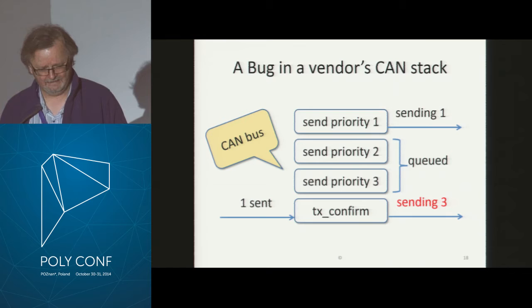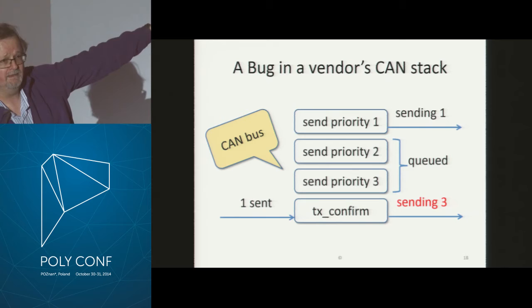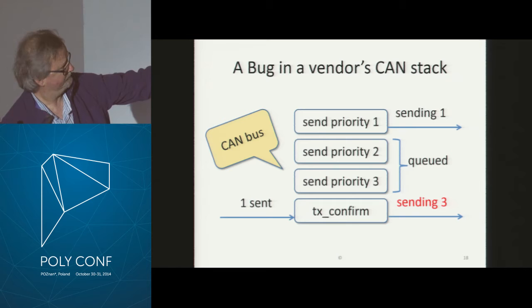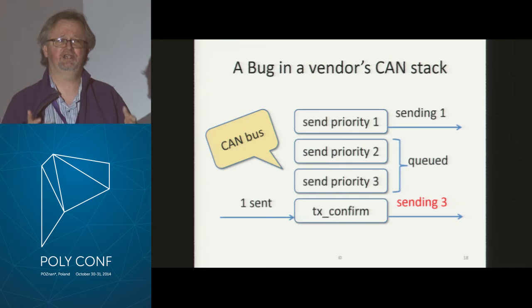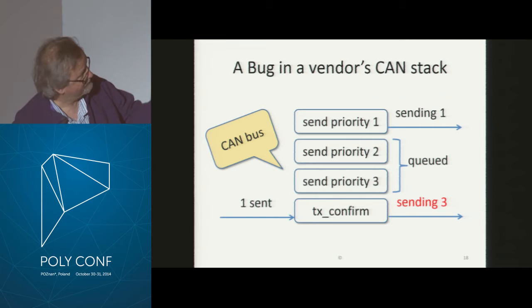Here's one of the bugs we found — a bug in a CAN bus stack. The CAN bus carries messages that have priorities; the lower the number, the higher the priority. This test case sends a message with priority one, and we see it sent on the bus. The bus can only carry one message at a time, so the next two calls to send message get queued up. The last call is a transmission confirmation saying: I've finished sending message number one. Which message should be sent next by the protocol stack? The one with priority two. And which one was sent? The one with priority three.